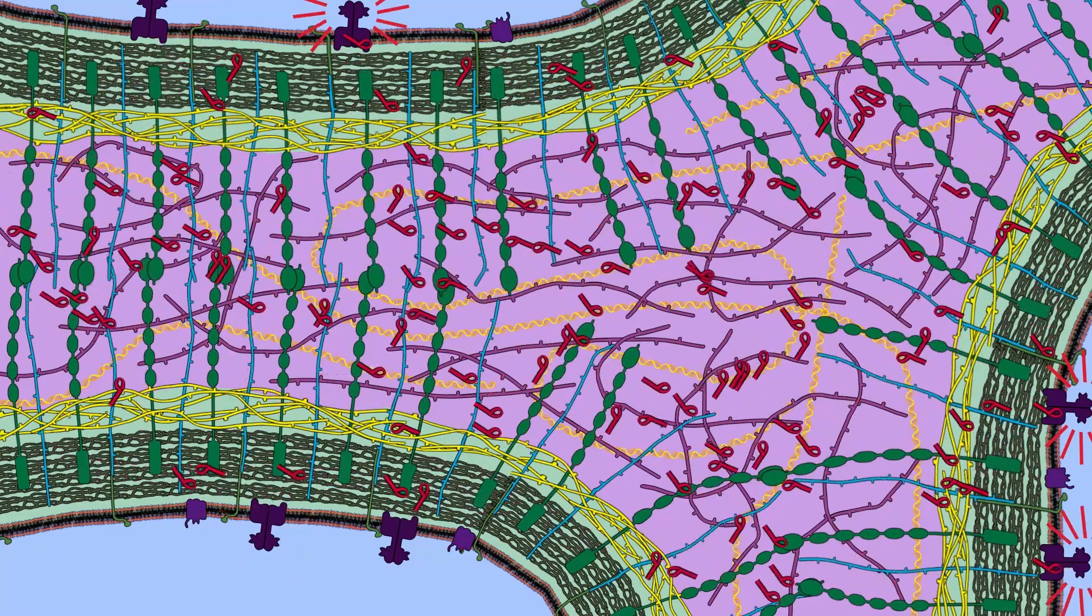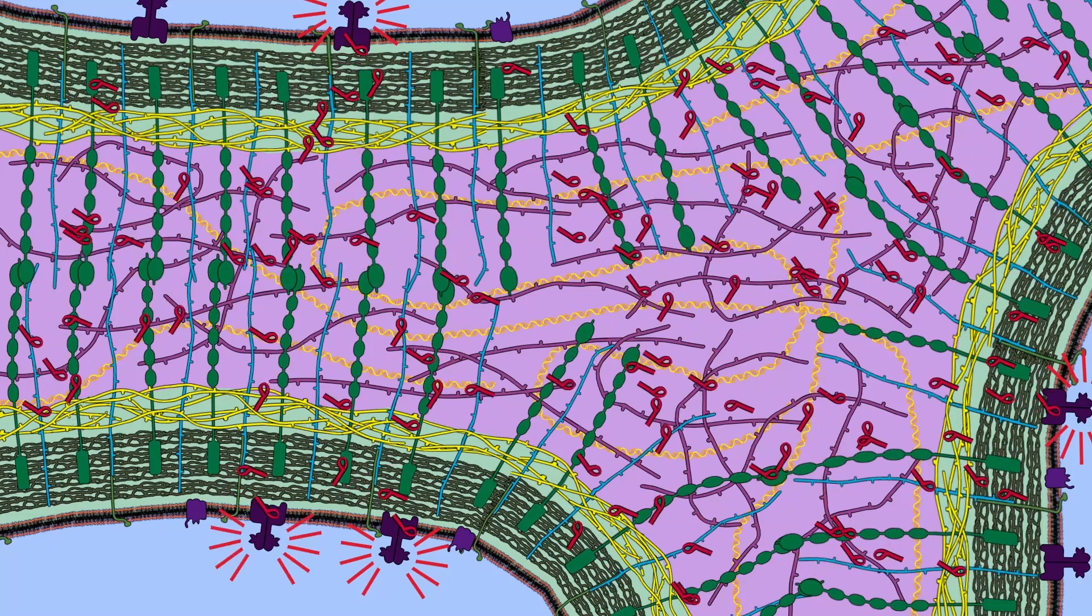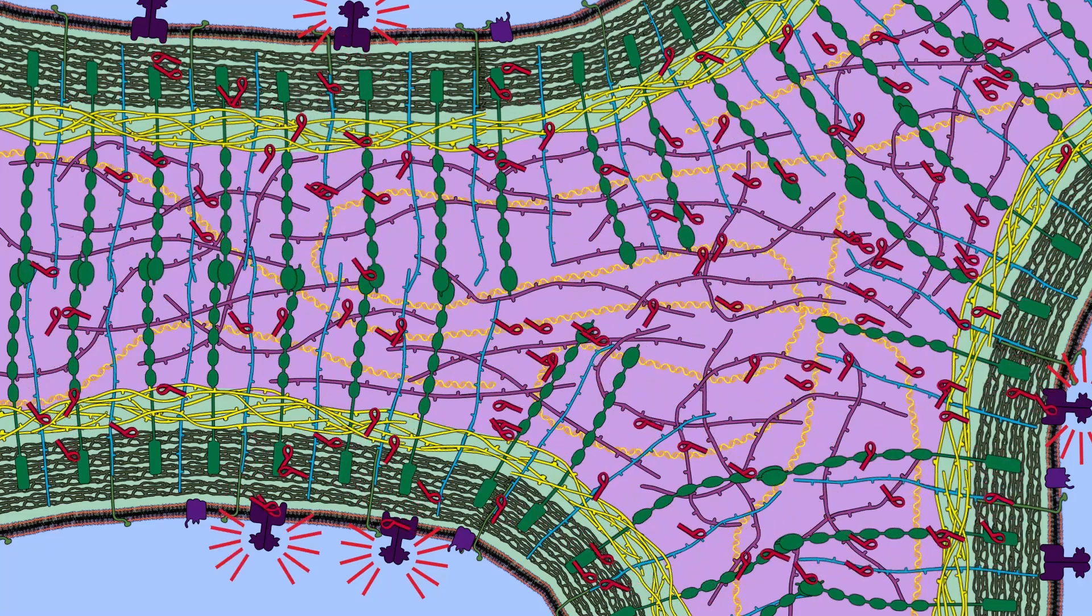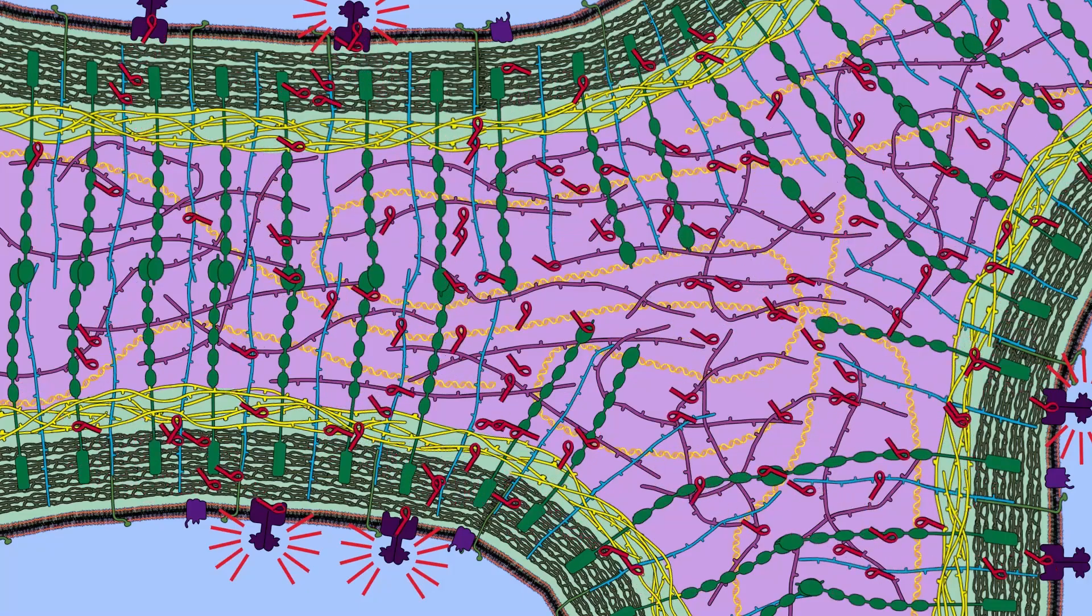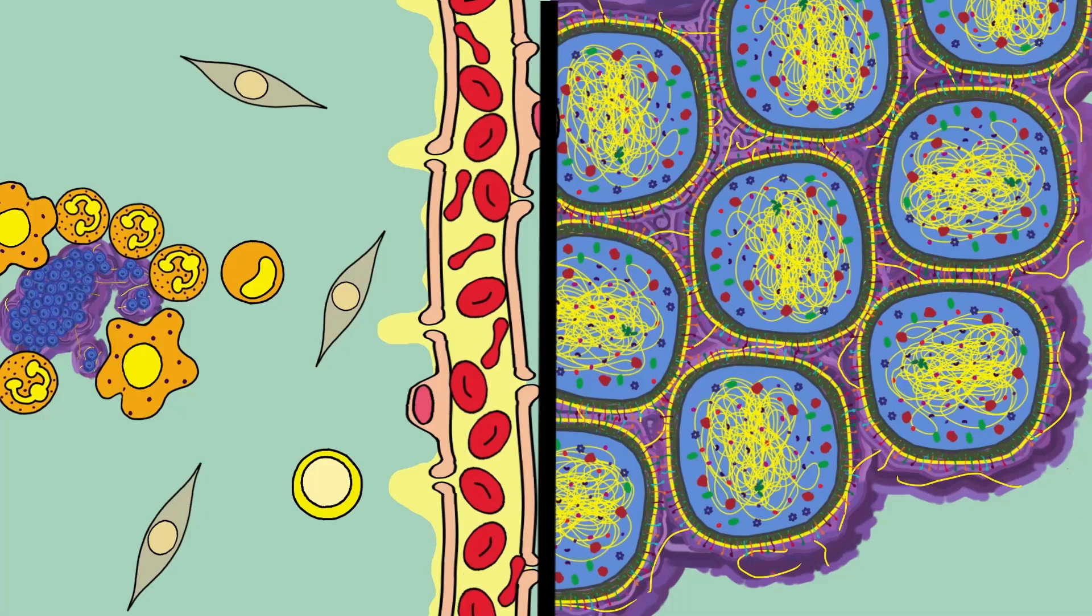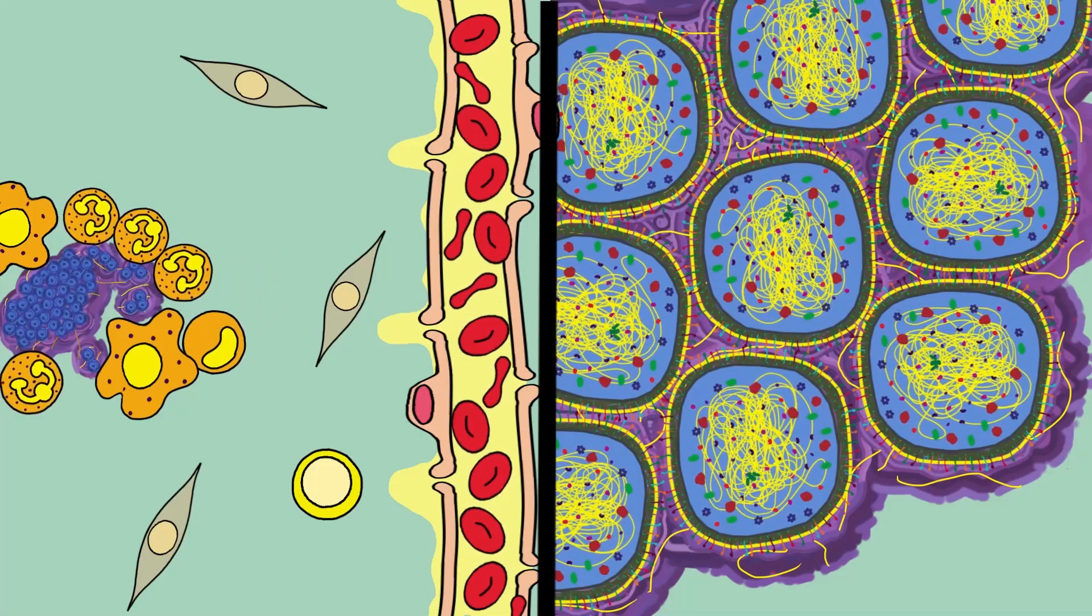When AIP concentration reaches a threshold level, AIP receptors in each Staphylococcus cell activate at the same time, synchronizing the colony to behave as one. The metabolism of the entire colony starts to change from benign to virulent.